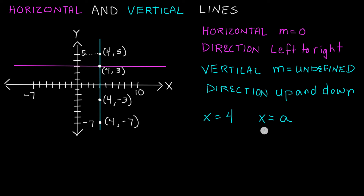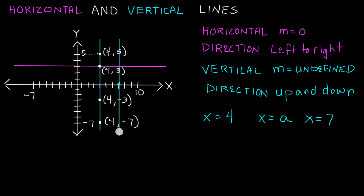So if a was equal to seven, we'd write x is equal to seven. X equals seven would describe the line where we go over seven units in the x direction and then draw our line there. This vertical line that crosses the point x equals seven is described by the equation x equals seven. And this other vertical line is described by the equation x is equal to four.